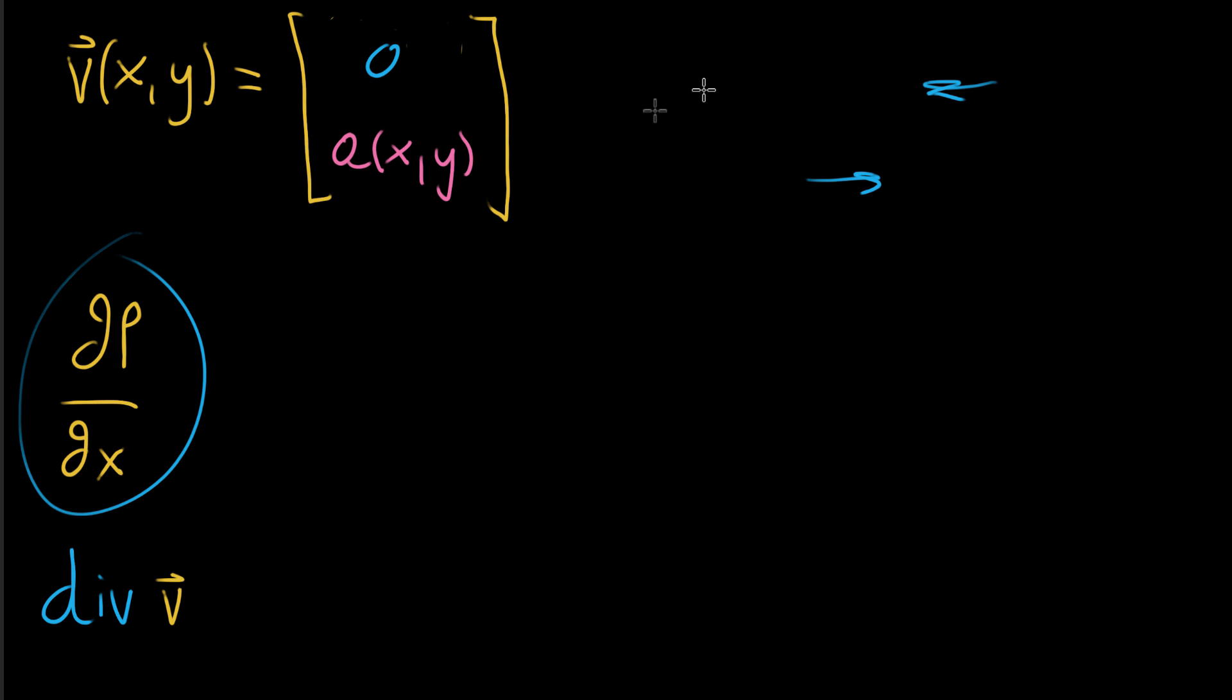And what this would mean, instead of thinking about vectors just left and right, now we're looking at vectors that are purely up or down. So doing the same thing we did last time, if we start thinking about cases where the divergence of our function at a given point should be positive, and an example of that, you might be saying, nothing is happening at the point itself, so q itself would be zero,